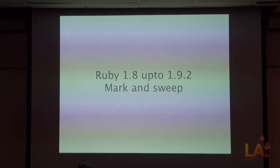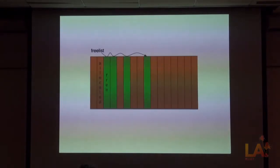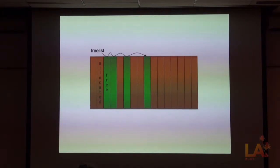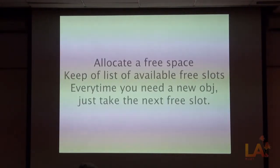Ruby 1.8 up through 1.9.2 uses a pretty standard garbage collection algorithm called mark and sweep. Each object — think of a bar in the diagram as a reference to an allocated object. What Ruby keeps track of internally is a list of all the free memory spaces. Any time you need a new object, it pops the first reference on that free list and gives it to the object. This list shrinks as you're allocating new objects. It just takes the next free slot.